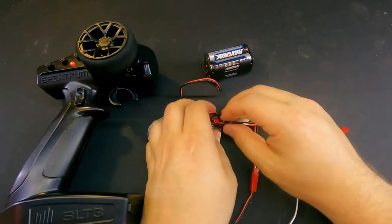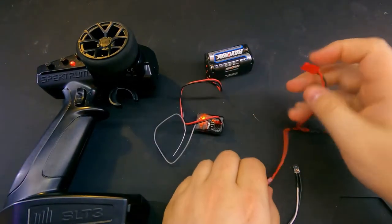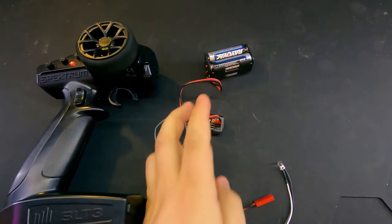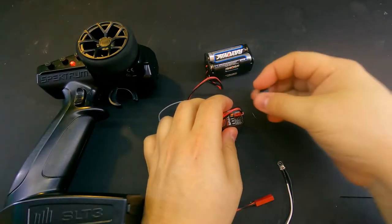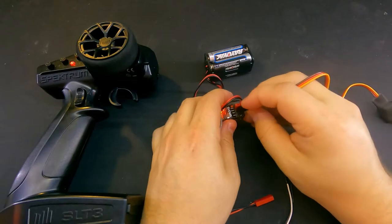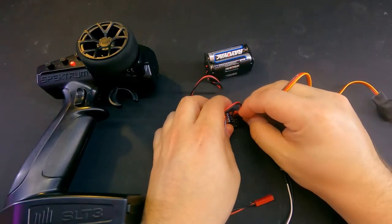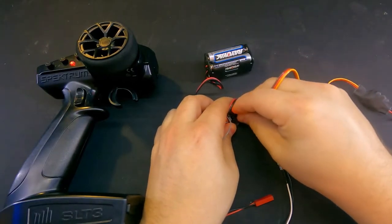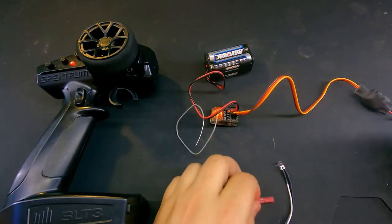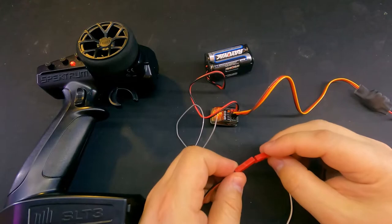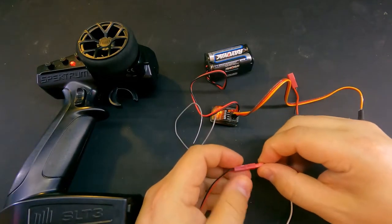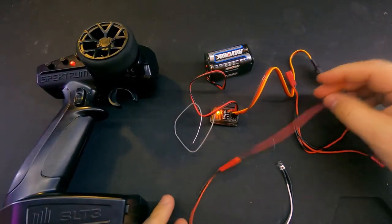Now, if we unplug our light kit from our receiver and plug in this electronic switch instead, we'll plug this switch into channel number three. Your auxiliary one is how Spectrum sets them up. We'll plug it in like so. And we'll plug our power cable... Sorry, I had the wrong cable there. Plug our power cable into our light kit.